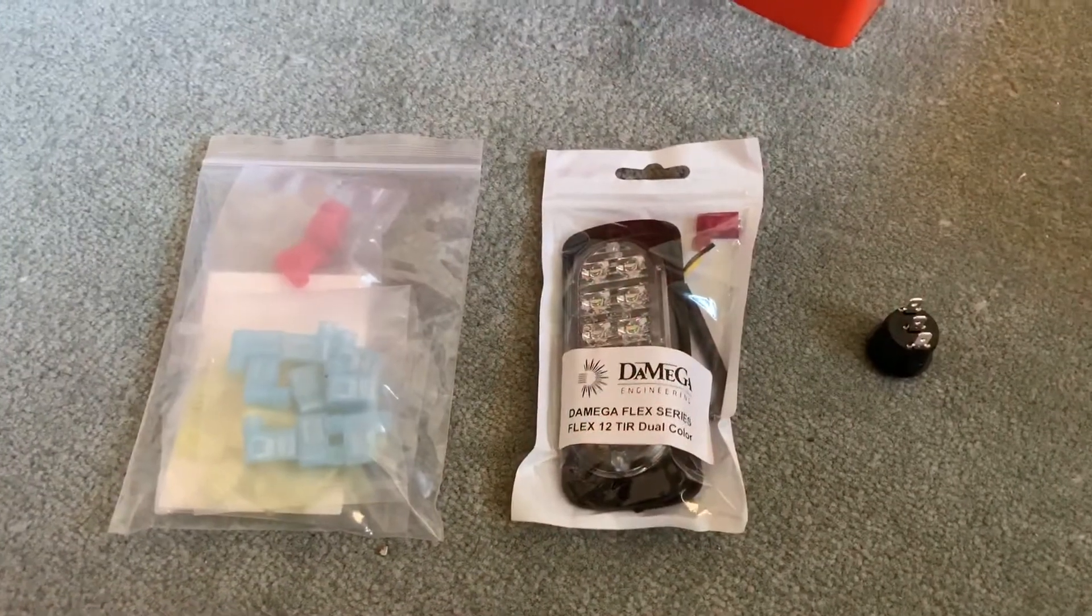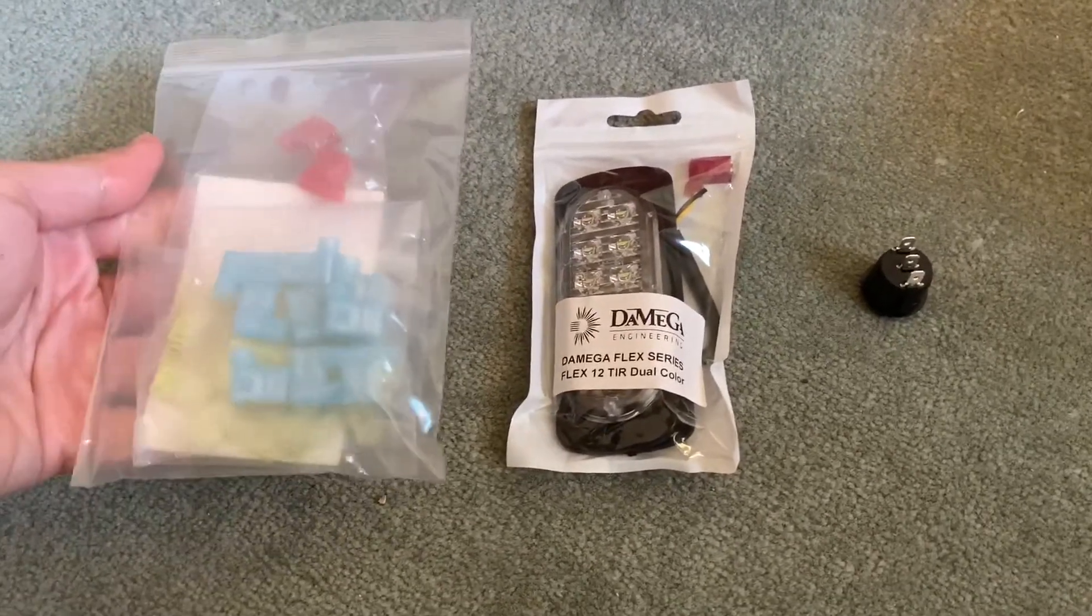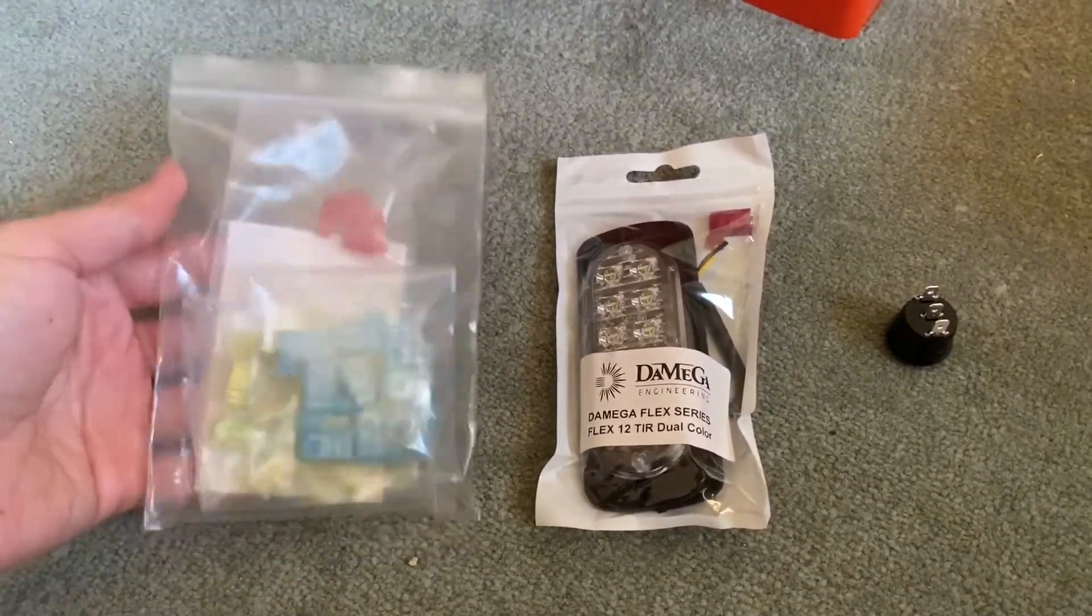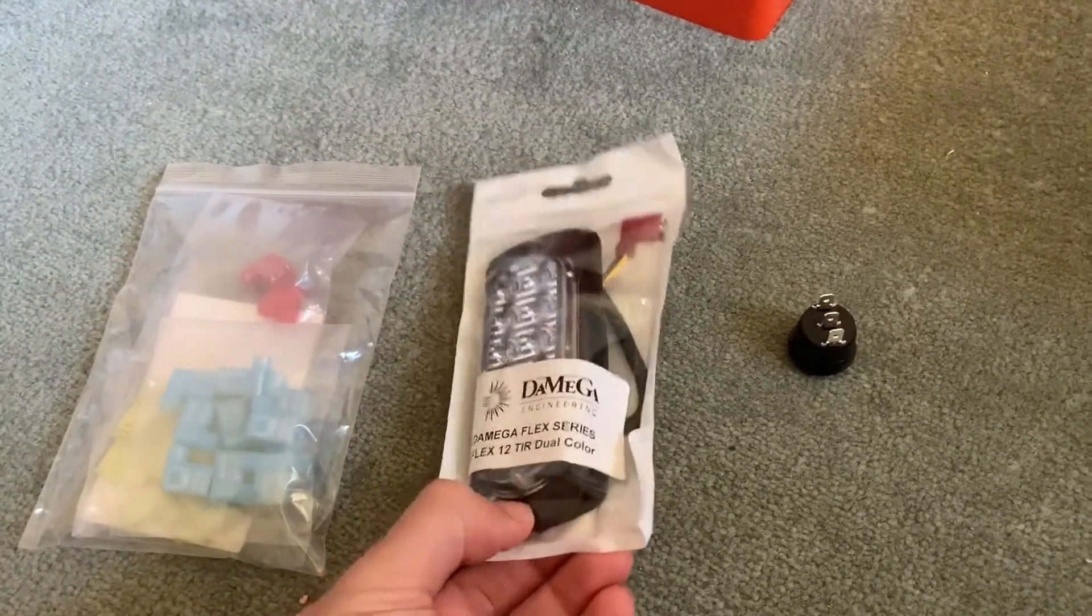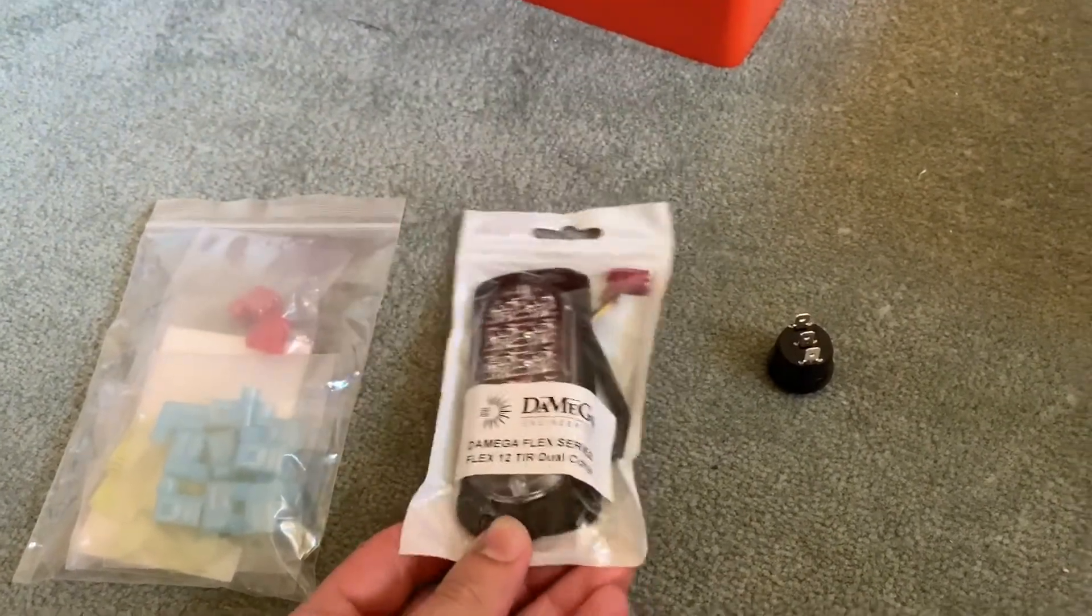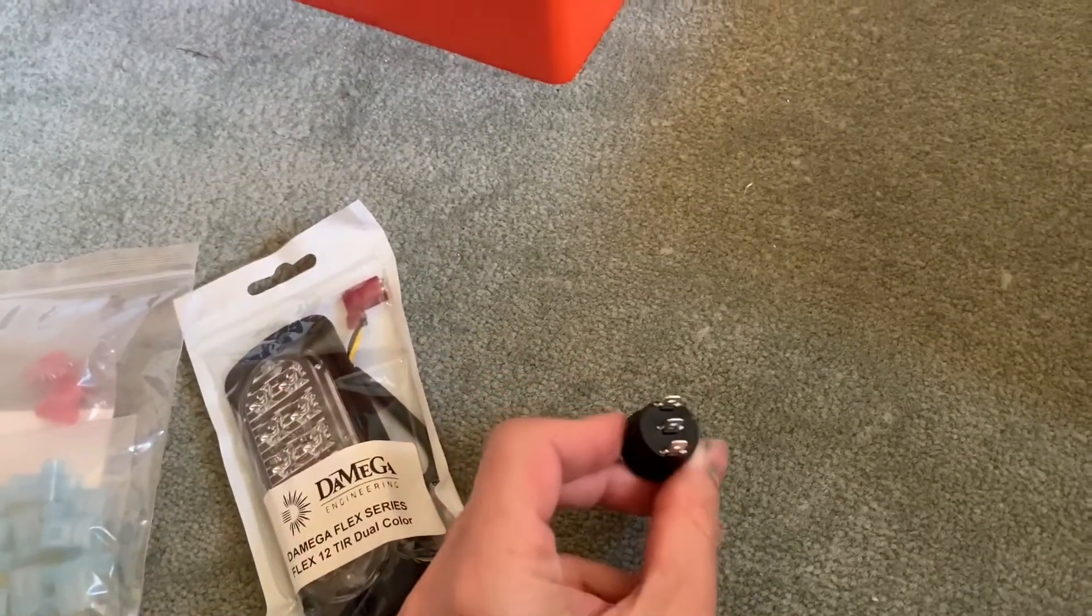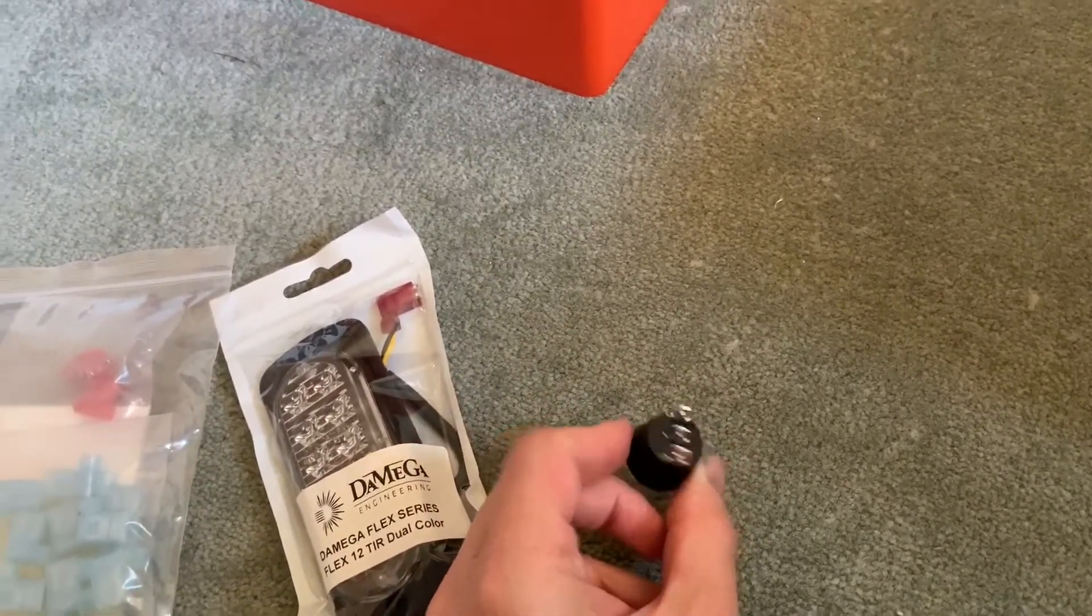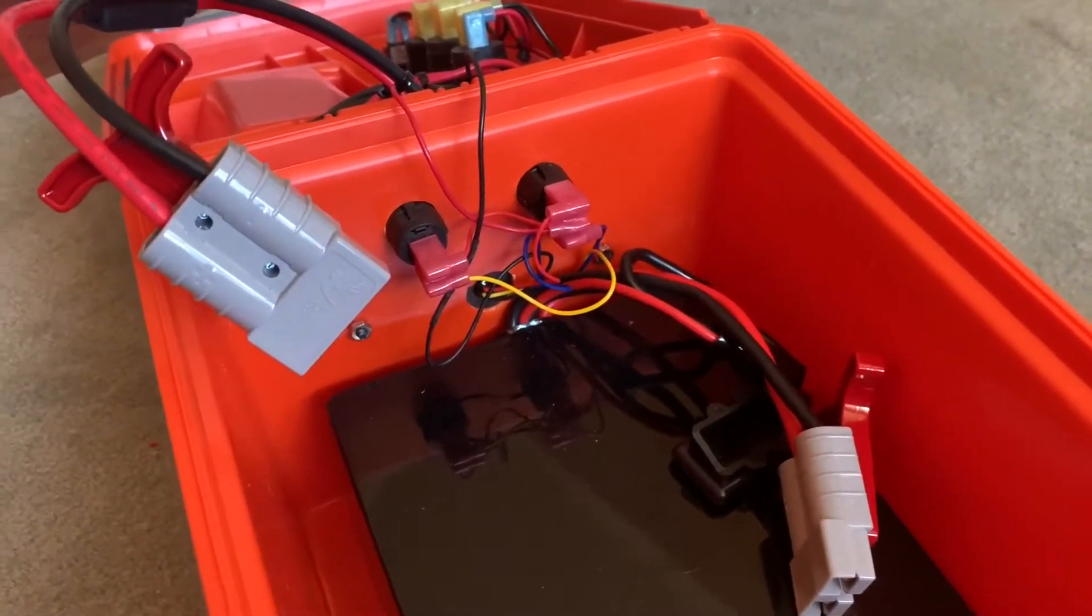So for this project, you'll need three things. You'll need a bag of these right-angle spade connectors that are flag connectors. You'll need a replacement light. This is from DaMega Engineering, but it's a dual-color light. And you'll need an on-off-on rocker switch. Everything you need, I'll put in the description of this video.